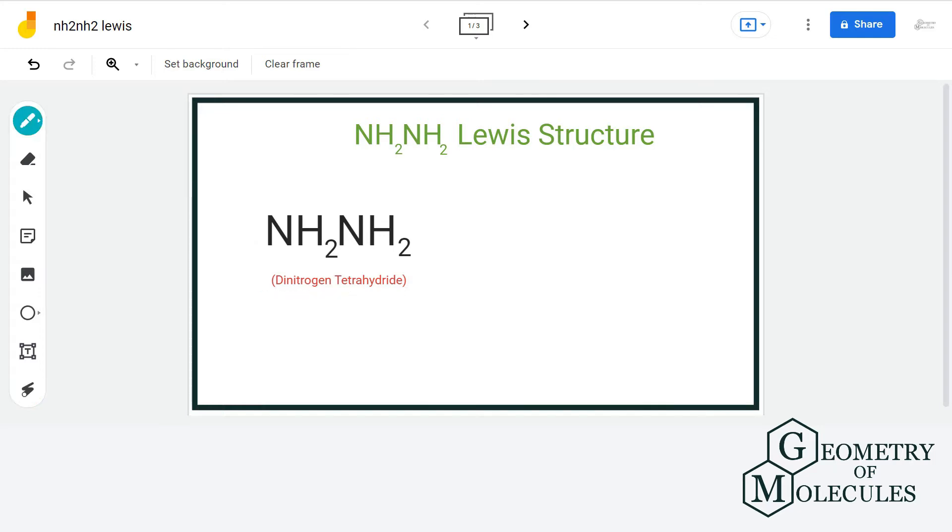Before determining its Lewis structure, let us count the total number of valence electrons NH2NH2 has. Therefore, we have 2 nitrogen atoms having 5 valence electrons and 4 hydrogen atoms having 1 valence electron. That gives us a total of 14 electrons.